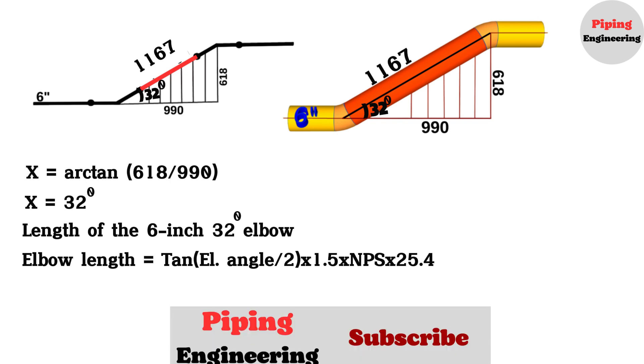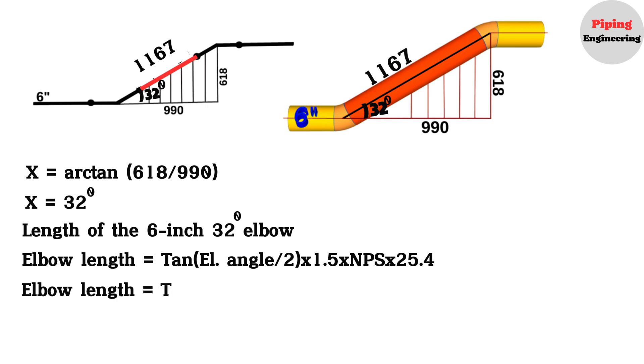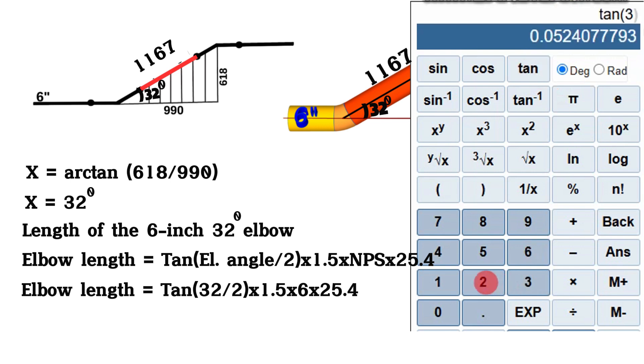Now we will substitute our elbow angle and nominal pipe size into this formula. So, our elbow length will equal the tangent of 32 divided by 2, times 1.5 times 6, multiplied by 25.4. Using a scientific calculator, the tangent of 32 divided by 2, times 1.5 times 6, multiplied by 25.4 will equal approximately 66 millimeters.